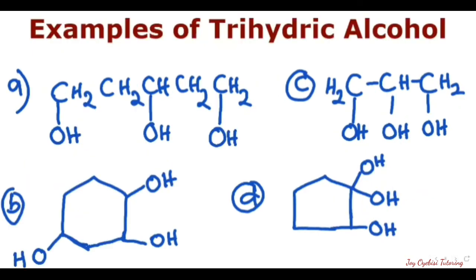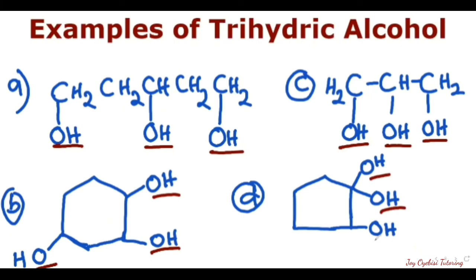The last type here is the trihydric alcohols, and these ones have three OH groups. We can see them clearly — three OH groups attached. There are three OH groups present in each of these compounds, so this type is classified as trihydric alcohol.